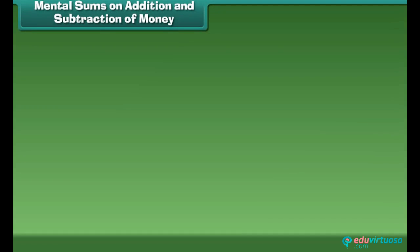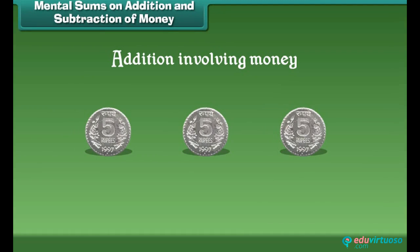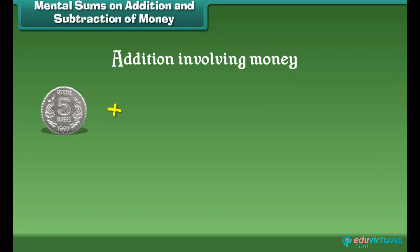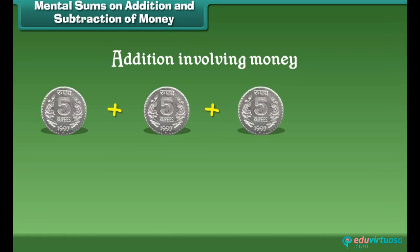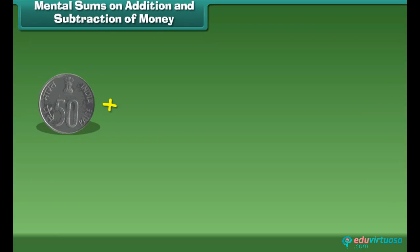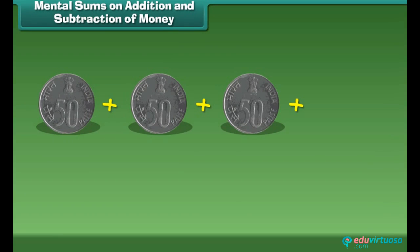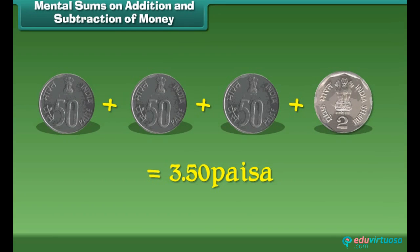Now let us learn about addition involving money. If I have 3 five-rupee coins, then can you tell me the total rupees I have? Add 5 plus 5 plus 5, which is equal to 15 rupees. Now I have 3 fifty-paise coins and a 2 rupee coin, which is equal to 3 rupees 50 paise.